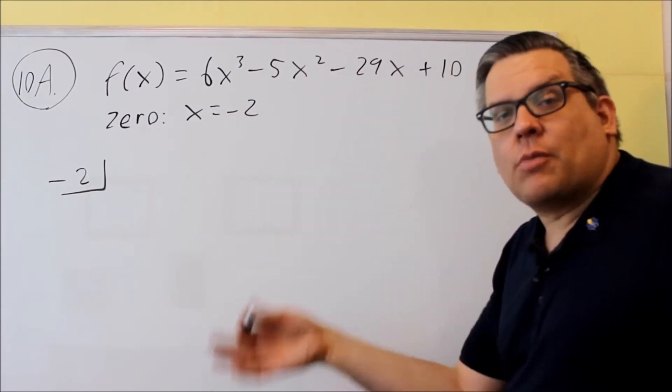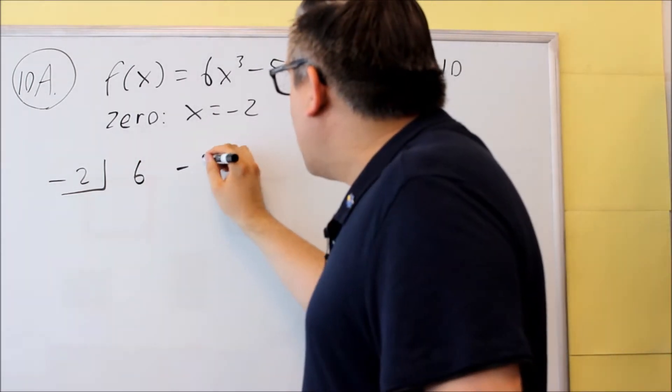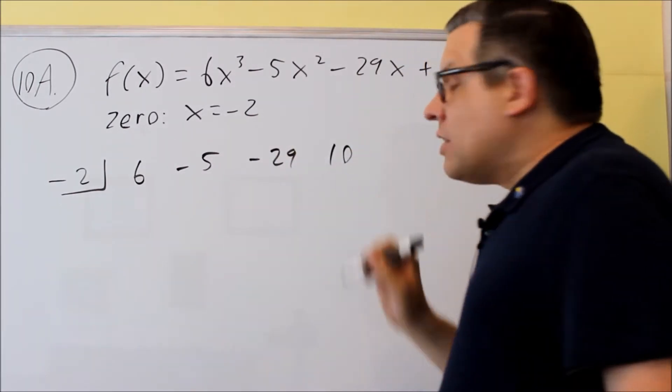We don't have to do this in this case because we have all the numbers accounted for: 6, negative 5, negative 29, and 10.